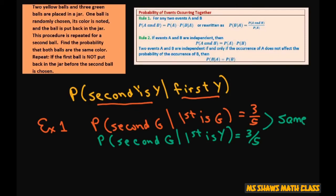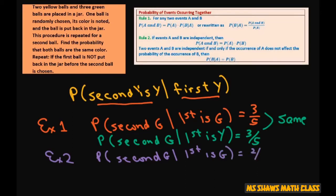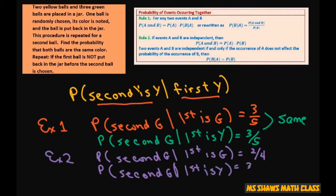But for example two, the probability that the second is green given that the first is green is two-fourths, and the probability that the second is green given that the first is yellow is three-fourths. Notice these two are different because we didn't do replacement.